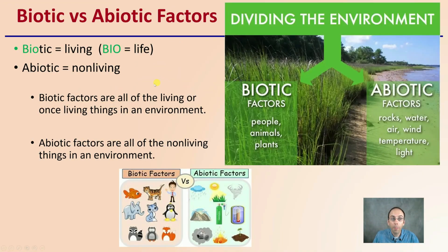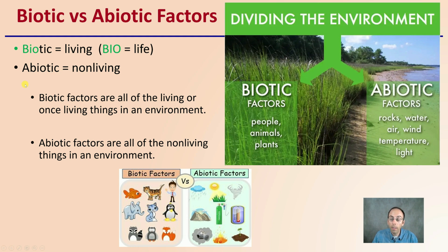We're talking about biotic versus abiotic. There are two main categories here. Biotic refers to the living — it stands for life. Abiotic refers to non-living factors. So biotics are all the living or once-living things in the environment, and abiotic factors are all the non-living things in the environment.